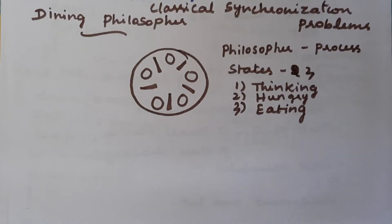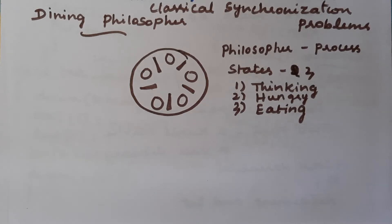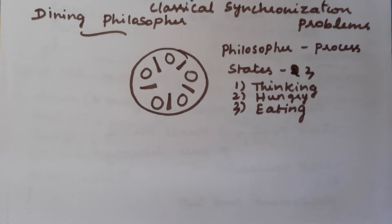Hello everyone. In this video we will discuss one of the most popular synchronization problems, which is the Dining Philosopher problem. There are many classical inter-process communication problems, also called classical process synchronization problems. One of the most popular is the Dining Philosopher problem. First I will explain the concept of this problem, and later we will discuss how to solve it.